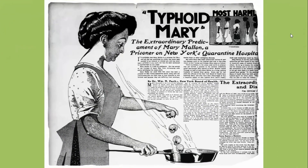A famous example is Typhoid Mary, a well-known carrier of the typhoid bacterium who was responsible for multiple outbreaks of typhoid fever in New York City around 1900. Her name was Mary, and as a cook, due to improper hand washing and lack of knowledge of the disease, 51 typhoid cases and 3 deaths were directly attributed to her. She was immune to the disease yet remained a carrier of the bacteria.